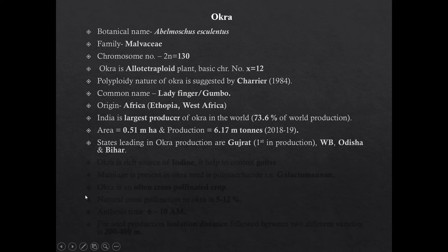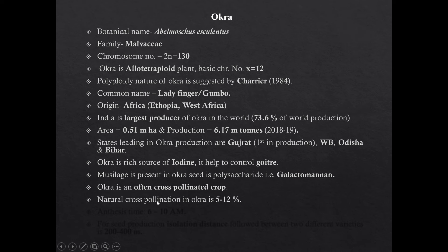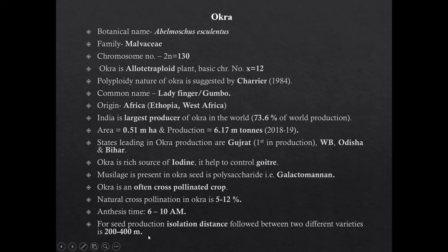Okra is a rich source of iodine which helps to control goiter. Mucilage present in Okra seed is a polysaccharide which is galactomannan. Okra is an often cross-pollinated crop. Natural cross pollination in Okra is 5 to 12%. Anthesis timing in Okra is 6 to 10 am. For seed production, isolation distance between two varieties of Okra is 200 to 400 meters.